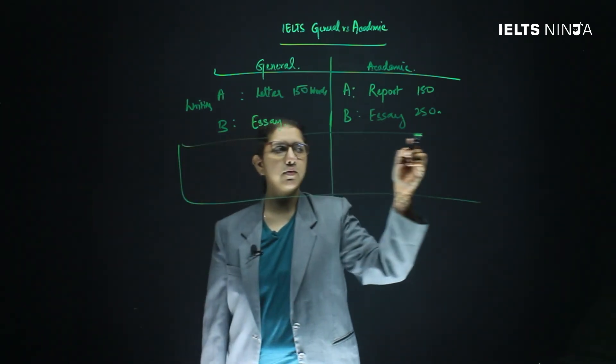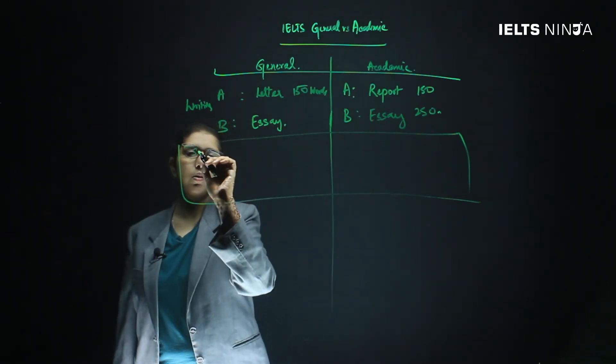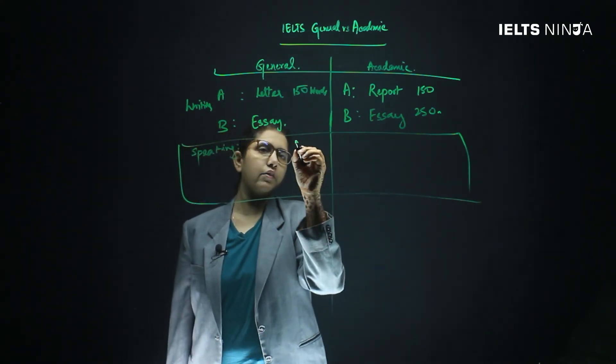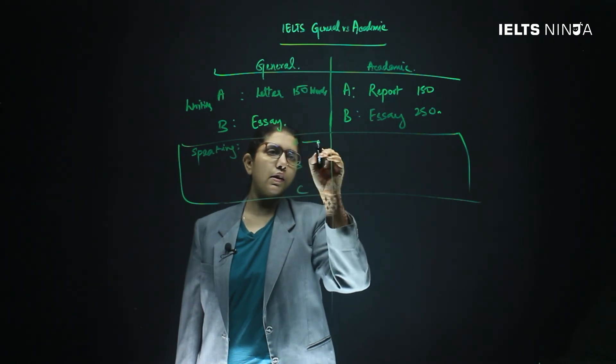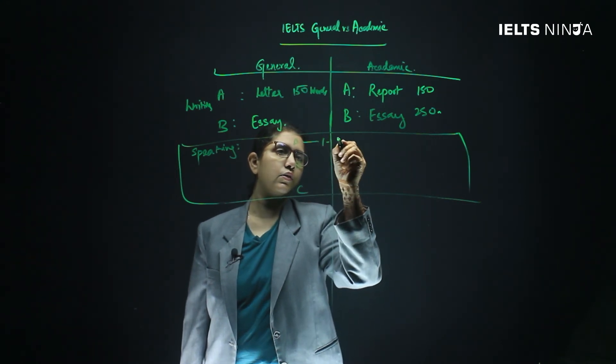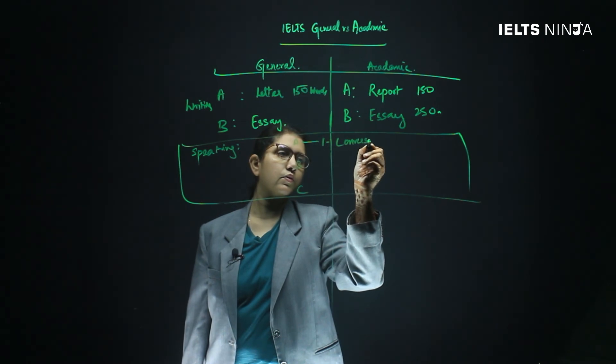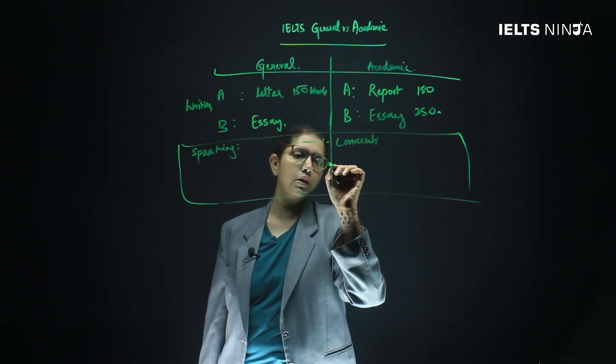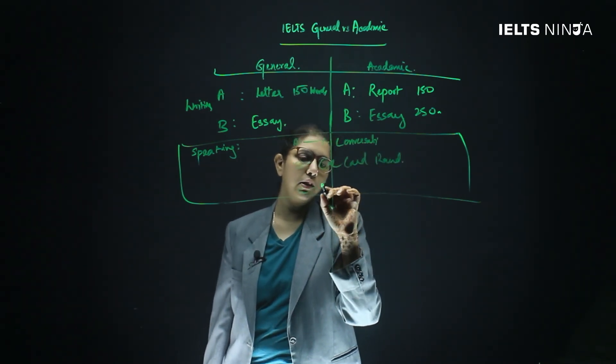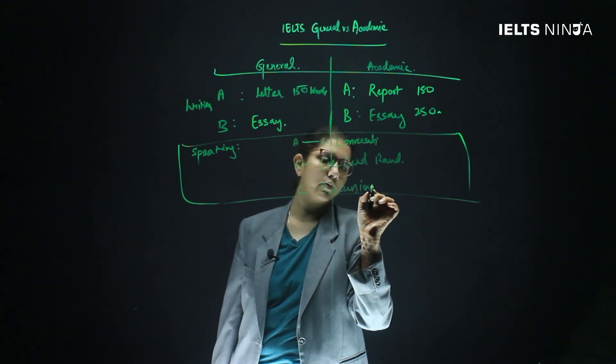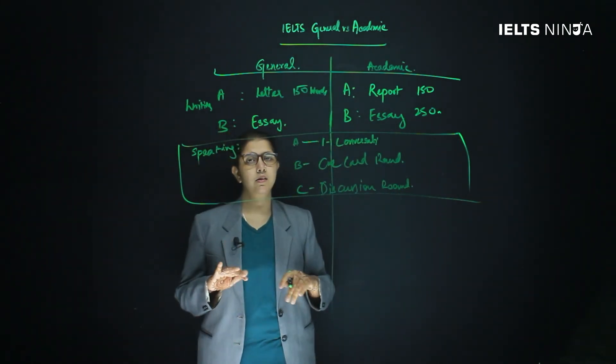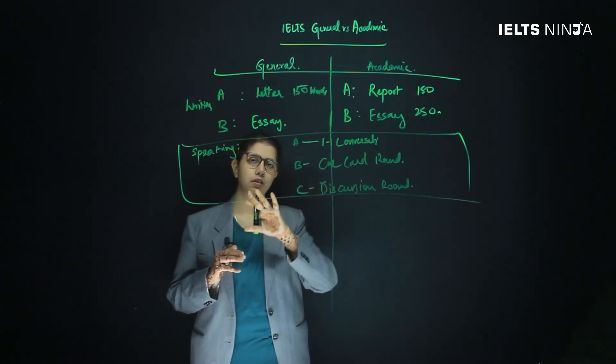The speaking test is going to be common for both. You will have three sections. The first section will be one-on-one conversation. Section B is going to be the cue card round. And section C is going to be the discussion round. Now, this is as far as the test itself, the pattern of the test for all the four sections.